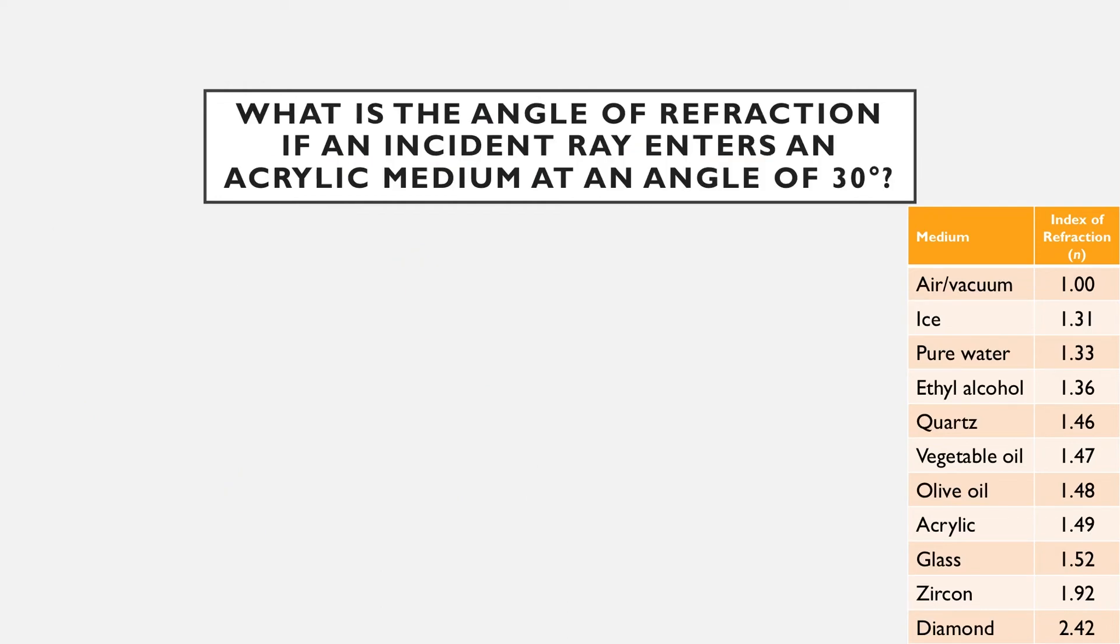This last example is going to have us make use of the second equation we introduced, the one that uses your trig functions, your sines and your angles. So what is the angle of refraction if an incident ray enters an acrylic medium at an angle of 30 degrees? So we have acrylic here. So let's write out our givens. We know that the n value is going to be 1.49. We have the incident ray because it tells us that the angle of incidence ray enters at 30 degrees and we're looking for the angle of refraction. So we have the incident ray 30 degrees and we're looking for the refracted ray.